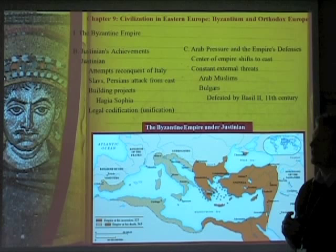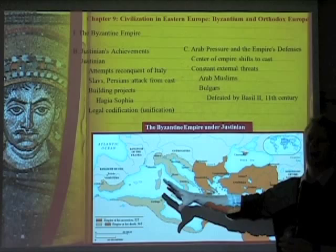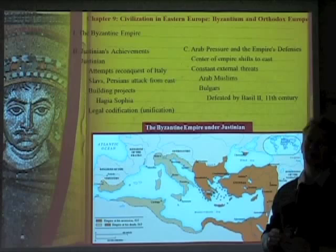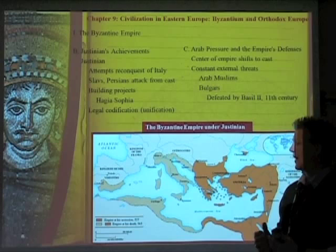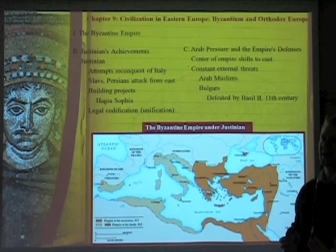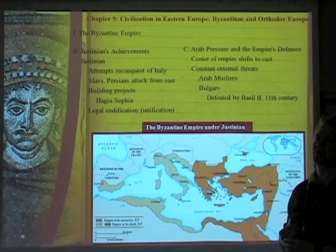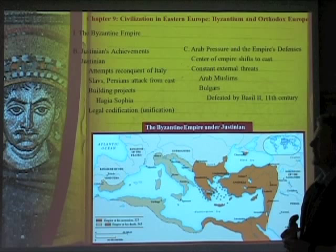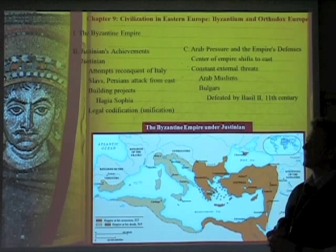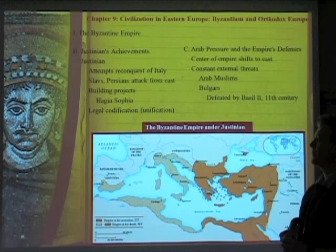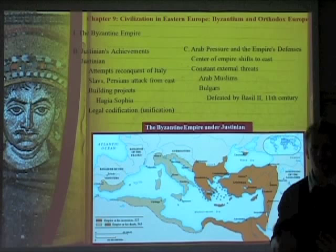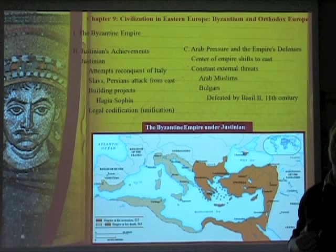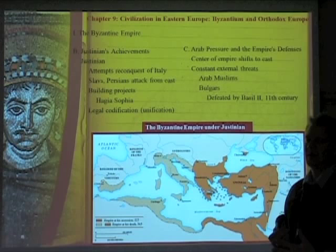Justinian's achievements: Justinian will try to reconquer the Roman Empire, wanting to reunite it as the West is in final decline and collapse. He starts to succeed in adding those lands back, but areas become too difficult to hold — especially borders with Germanic tribes and Slavic regions — and those attempts ultimately fail. He will have building projects, including the Hagia Sophia, a large church with a massive dome. He also pursued legal codification, uniting all Roman laws into one set of common laws for better understanding and flow in the court systems.